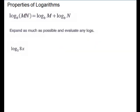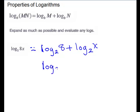Next we have log base 2 of 8x. The log of a product equals the sum of the logs, so log base 2 of 8 plus log base 2 of x. We'll rewrite 8 in terms of 2 to some power — 8 is 2 to the third — so log base 2 of 2 to the third simplifies to just 3, because the bases are the same. For the second term, we cannot rewrite x in terms of 2, so we keep it as log base 2 of x. That is our expanded answer.